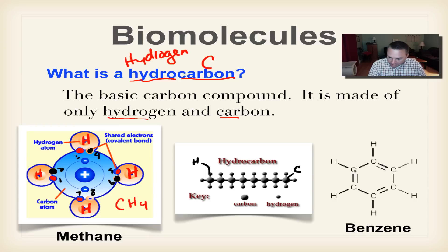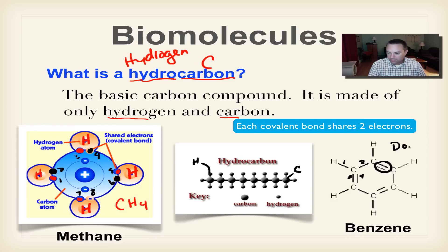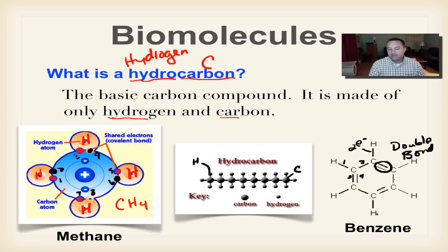This right here is what we call a double bond. Each of these lines represents two electrons. Looking at any carbon in the ring: four bonds times two electrons equals eight, so we have satisfied the octet rule — every carbon is bonded with four things and each hydrogen is bonded with one. One of the things we want to remember about hydrocarbons is that they're all nonpolar, so none of these will actually dissolve in water.